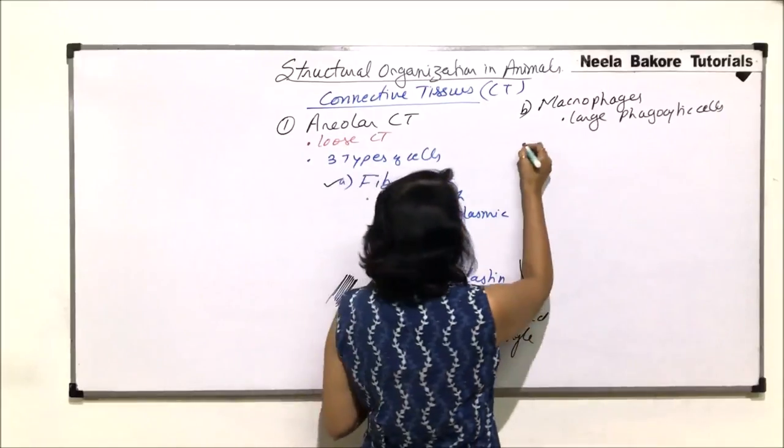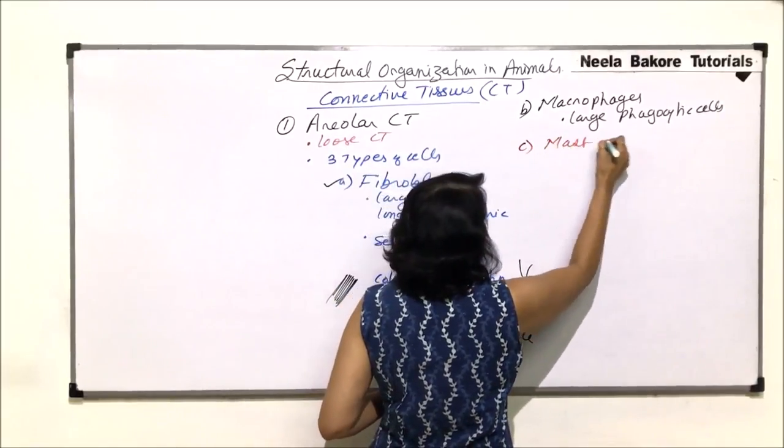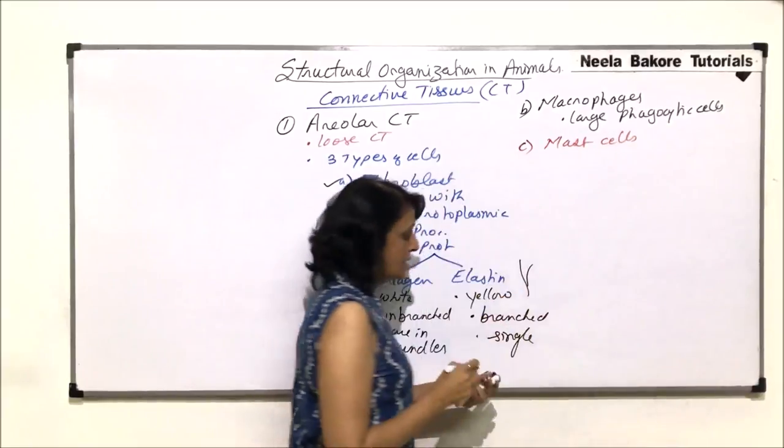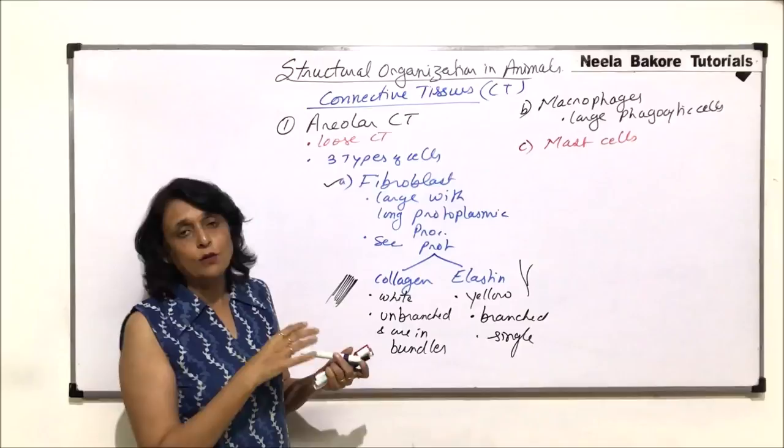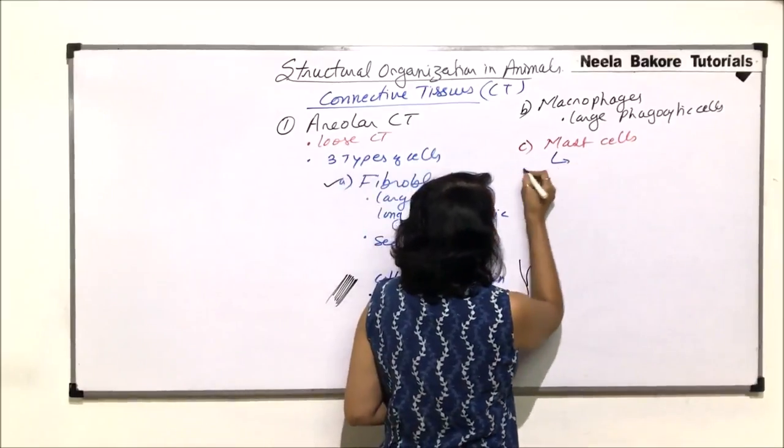And third category of cells are known as mast cells. Mast cells are large, slightly ovoid, not irregular but little oval. And they secrete.